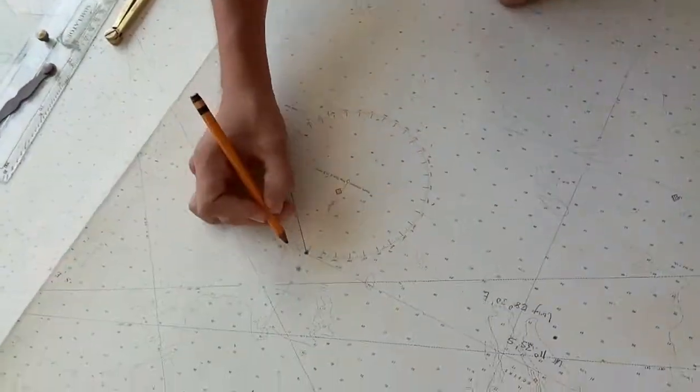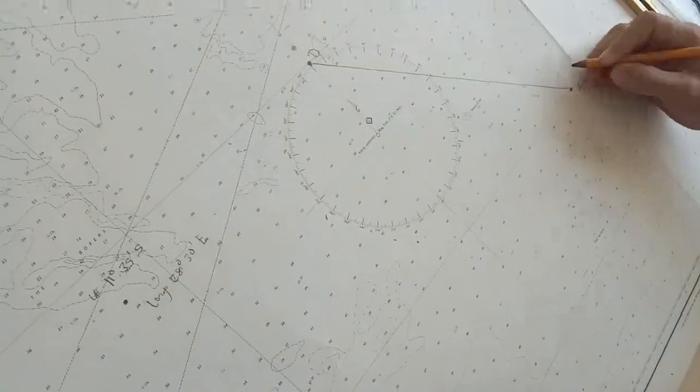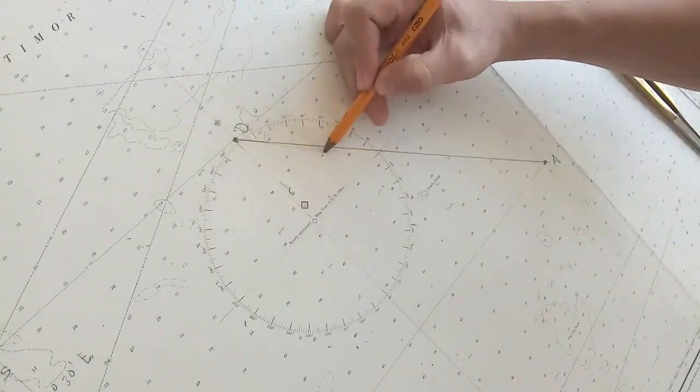So for example, this is your departure and this is your arrival. This line, this line is called RAM line.